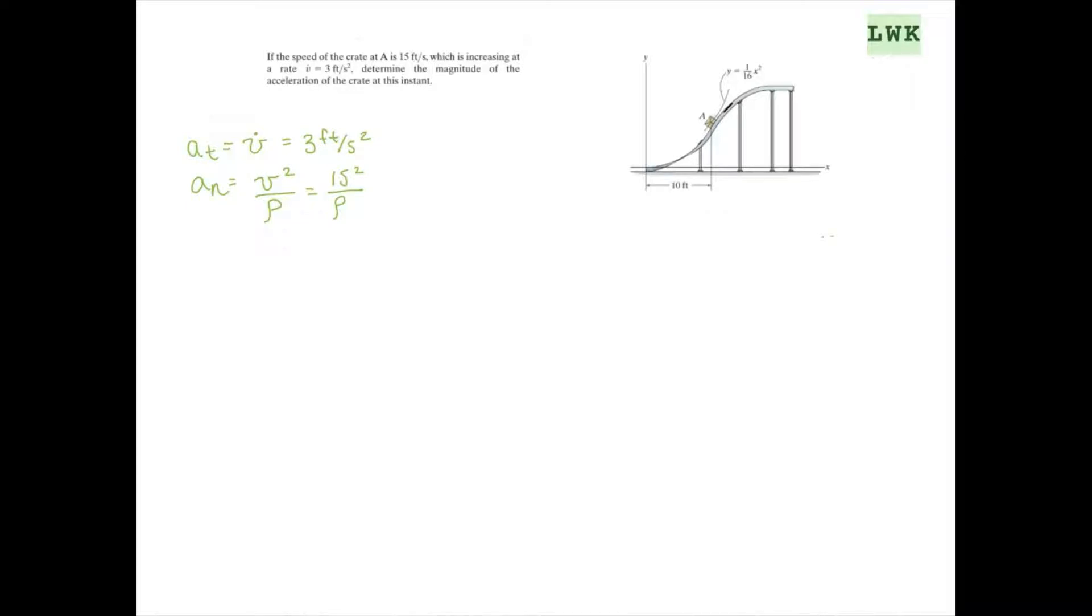So we're going to have to solve for rho, which we can do because we know the equation of y equals 1 over 16, x squared. So when we know the equation for y equals f of x, we can use this equation for rho: 1 plus dy/dx squared over the absolute value of d²y/dx². So we can start now by plugging in for rho.